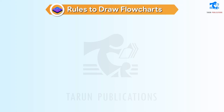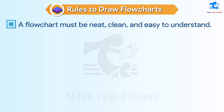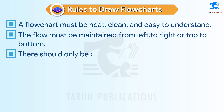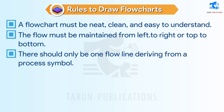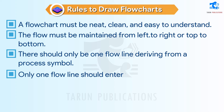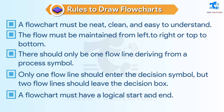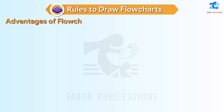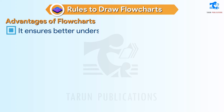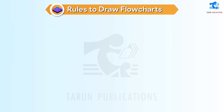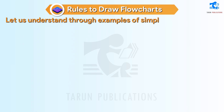Rules to draw flowcharts: a flowchart must be neat, clean, and easy to understand. The flow must be maintained from left to right or top to bottom. There should only be one flow line deriving from a process symbol. Only one flow line should enter the decision symbol, but two flow lines should leave the decision box. A flowchart must have a logical start and end. Advantages of flowcharts: it ensures better understanding of a problem and enables a programmer to analyze the problem in detail.